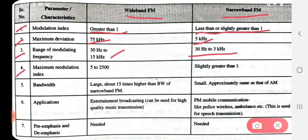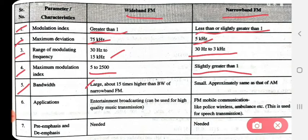Fourth parameter — maximum modulation index: wideband FM ranges from 5 to 25,000; narrowband FM is slightly greater than 1. Fifth parameter — bandwidth: wideband FM bandwidth is large, about 50 times higher than that of narrowband FM. Narrowband FM bandwidth is small, approximately the same as that of AM.